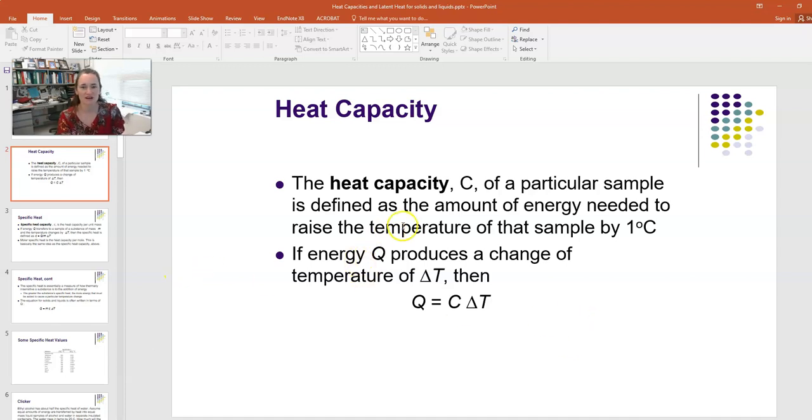If we define the heat capacity C as the amount needed to raise the temperature of the sample by one degree, then the amount of energy Q that needs to be transferred to change that temperature is Q equals C times delta T.